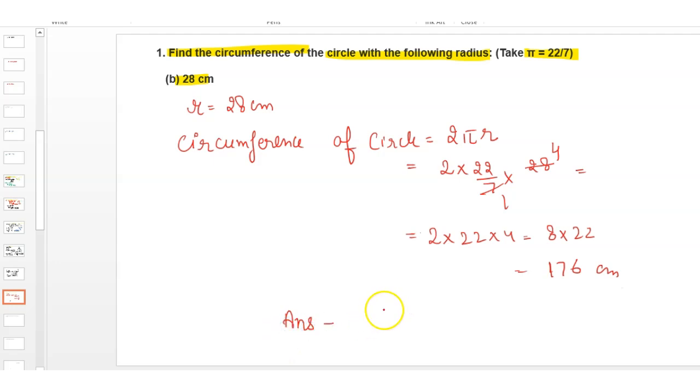is circumference of circle = 176 cm. This is your final answer to this question.